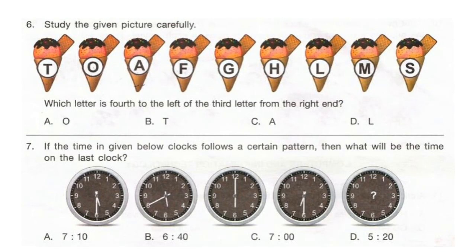Question 6: Study the given picture carefully. Which letter is fourth to the left of the third letter from the right end? First find out the third letter from the right end, that is L, and then the fourth to the left of L. The answer is option C, A. Question 7: If the time shown in the clocks follows a certain pattern, what will be the time on the last clock? Try to find your answer. The correct answer is option B.